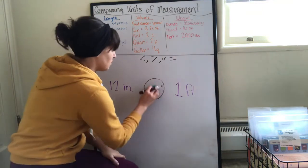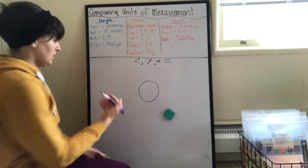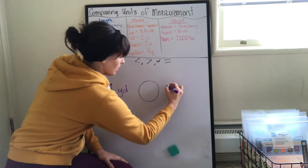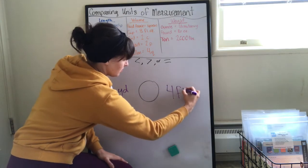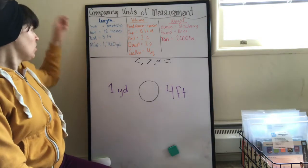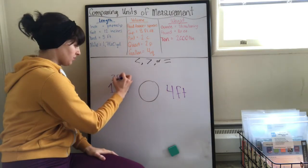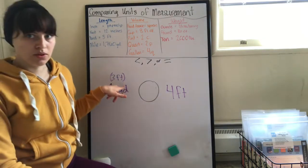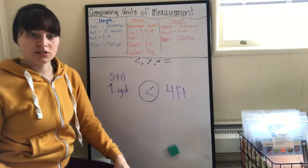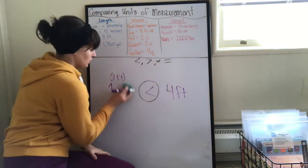The next one we're going to do is one yard and four feet. Let's see, one yard equals three feet. So what's bigger, three feet or four feet? Four feet. So we're going to start getting two different kinds of measurements and we have to decide which one's bigger.